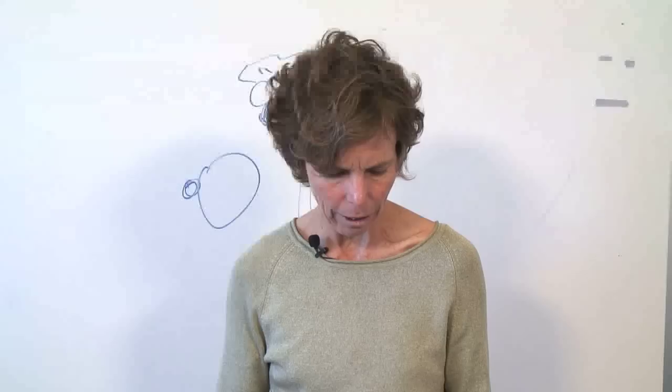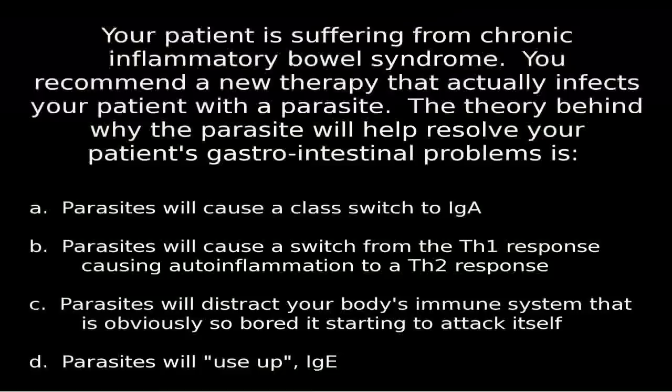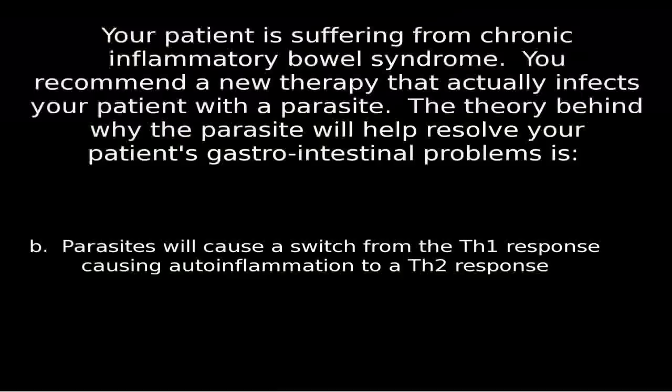Going through the answers: A — parasites will cause a class switch to IgA. No, that's not true; IgA class switching has to do with mucosal immunity. Answer B — parasites will cause a switch from a TH1 response causing inflammation to a TH2 response. That is actually true. Parasites will induce a TH2 response because the usual suspects for dealing with parasites are TH2 cytokines.